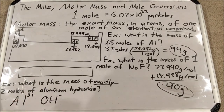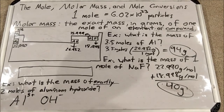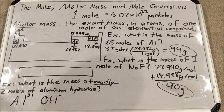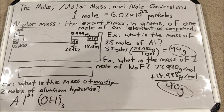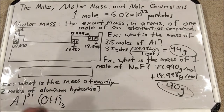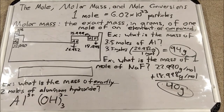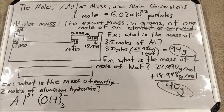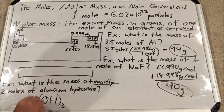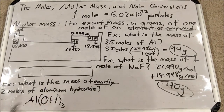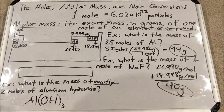If we want to combine aluminum and a hydroxide ion, we need the charges to balance. We find the least common multiple of three and one, which is three. So we'll need three hydroxide ions — written as Al(OH)3. Three plus and three minus combine to get a neutral compound. This is aluminum hydroxide, and I'm asked for the mass of exactly two moles of it.